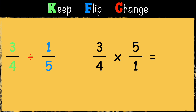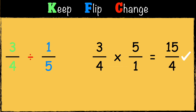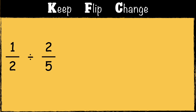Multiplying fractions is nice and easy. First multiply the numerators: three times five is fifteen. Then we multiply the denominators: four times one is four. So the answer is fifteen-quarters. Here's the next example: one-half divided by two-fifths.